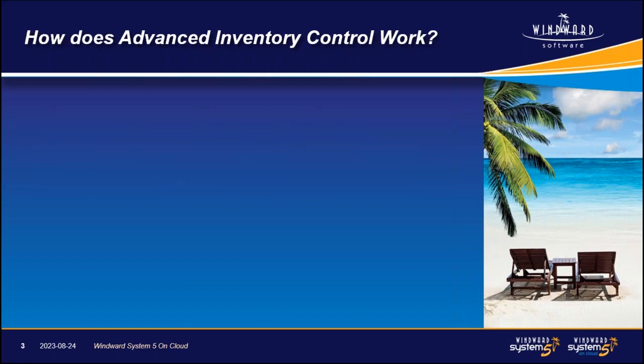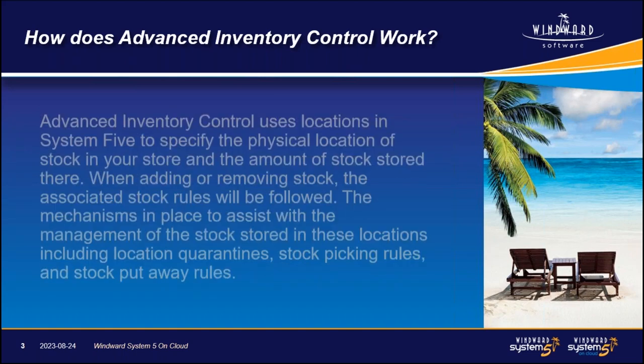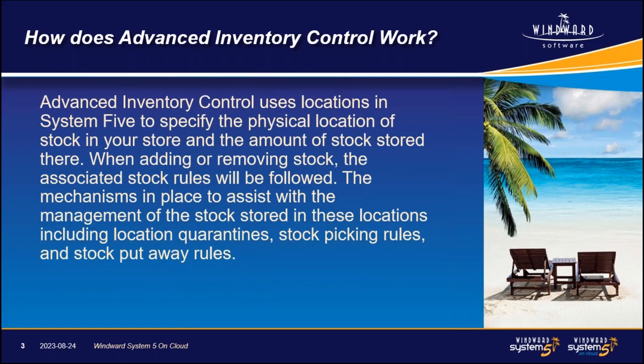Now, how does advanced inventory control work? Advanced inventory control uses locations in System 5 to specify the physical location of stock in store and the amount of stock stored there. When adding or removing stock, the associated stock rules will be followed. The mechanisms in place to assist with stock management include location quarantines, stock picking rules, and stock put away rules.